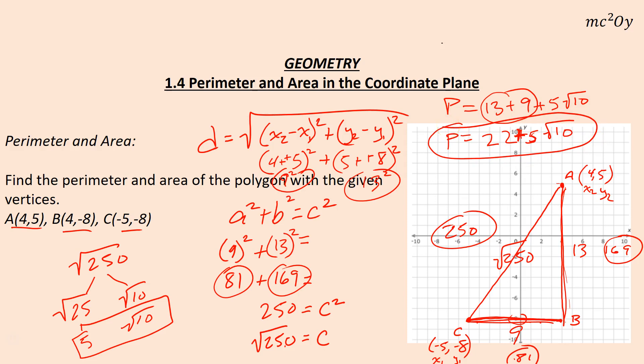To find the area, the area of a triangle is one-half base times height. Your base and height come together at your right angle, so my 9 and my 13 are my base and my height. We multiply by one-half. So 9 × 13 is 117, times one-half.